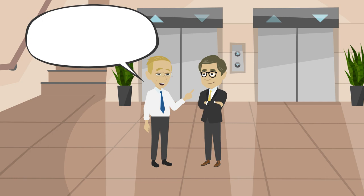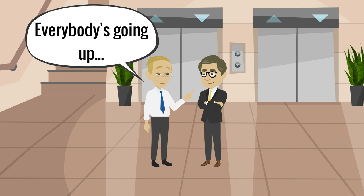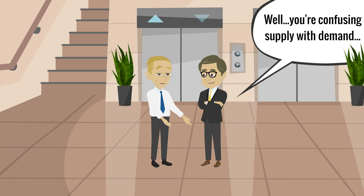He was also known for his love of gossip and his quick wit. One story tells of Arrow and colleagues waiting for an elevator to take them down, while several passed them going up. The colleague wondered aloud why everyone was going up. The immediate reply: You're confusing supply with demand.